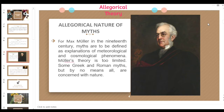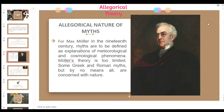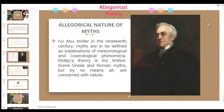For Max Muller in the 19th century, myths are to be defined as explanations of meteorological and cosmological phenomena. Muller's theory is considered too limited — some Greek and Roman myths, but by no means all, are concerned with nature. The 19th century Sanskritist Max Muller supported an allegorical view of myth. He believed that myths began as allegorical descriptions of nature but gradually came to be interpreted literally.